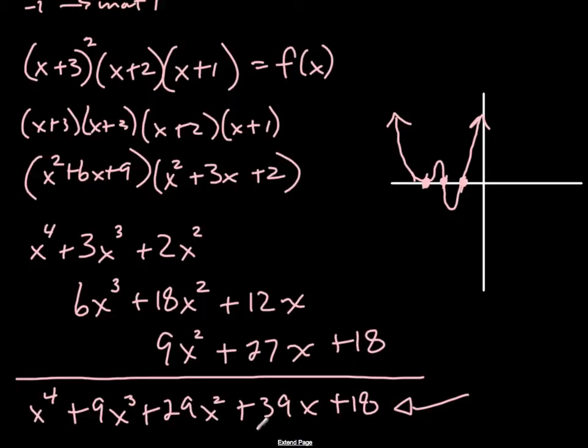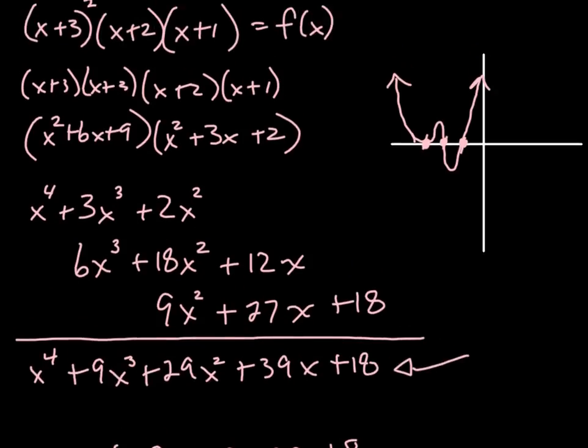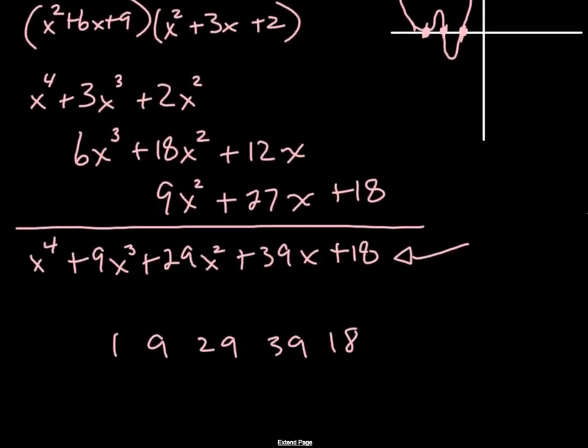You know, a nice thing that you could do to test, and see if this is correct, just to check. You could say, well, let's try synthetic division. So 1, 9, 29, 39, and 18. And any one of those numbers that they had up top there should work. So let's try, say, minus 2.